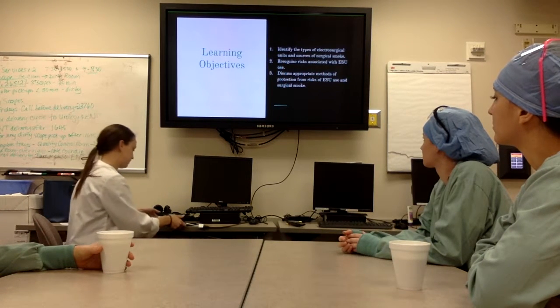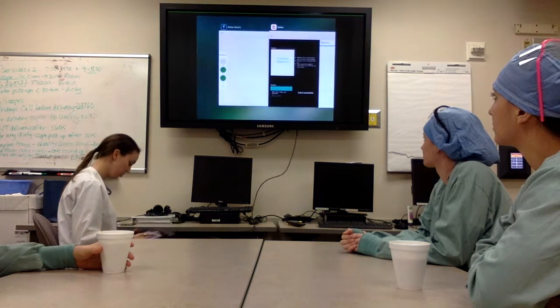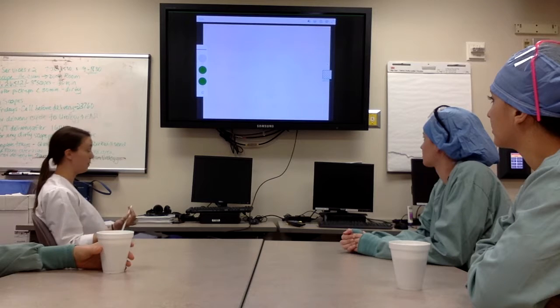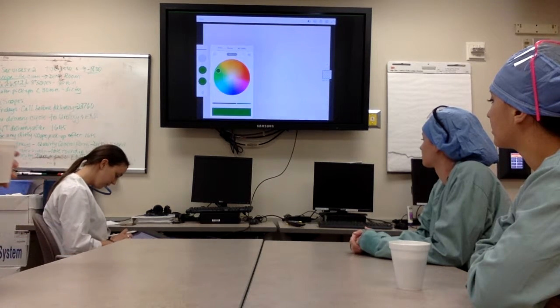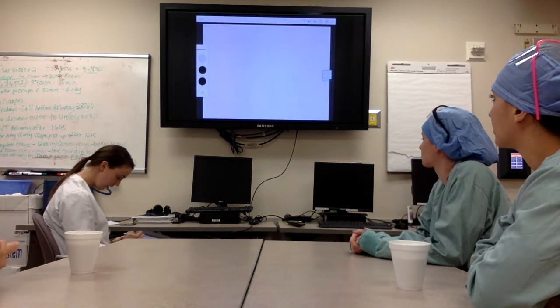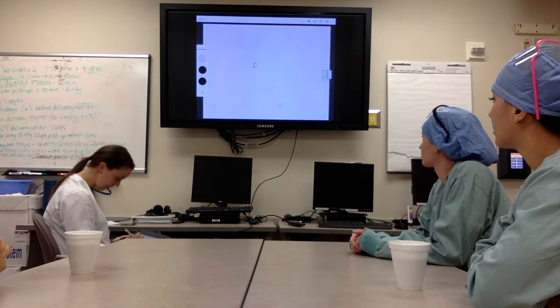To do this, we are going to make a concept map. So we will start with ESU and surgical smoke in the center.